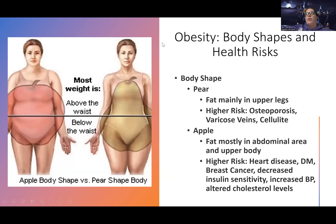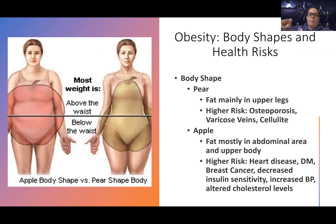Body shape — where body fat is stored — can make a difference in the health problems obese patients experience. This makes sense because where fat creates pressure and problems would logically lead to more issues in those areas. For example, I am pear-shaped — I have most of my fat in my thighs and hips.